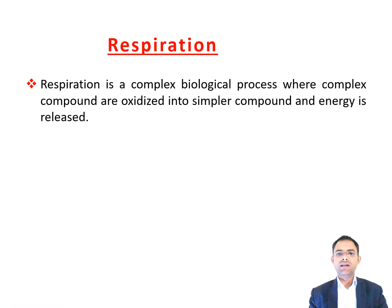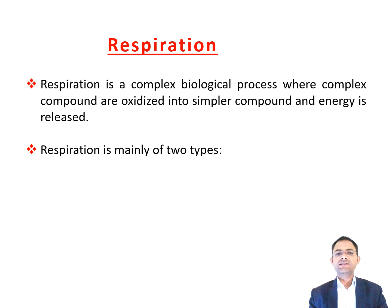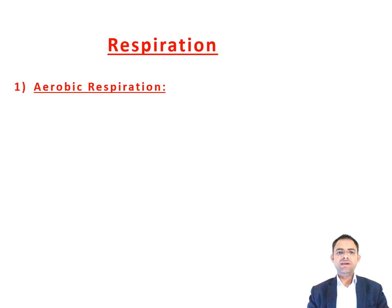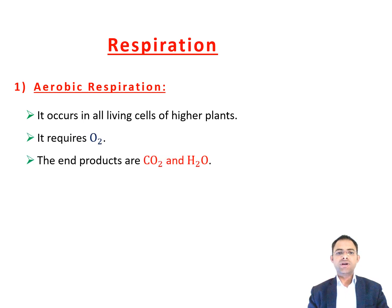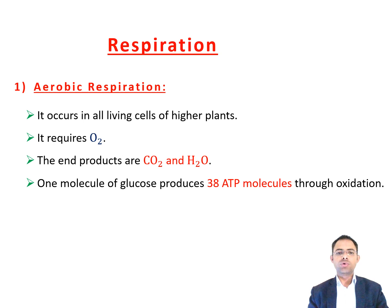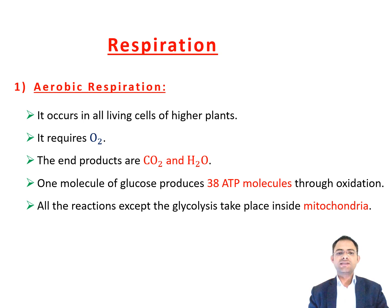Respiration is a complex biological process where complex compounds are oxidized into simpler compounds and energy is released. Respiration is mainly of two types: aerobic respiration and anaerobic respiration. Aerobic respiration occurs in all living cells of higher plants. It requires oxygen. The end products of aerobic respiration are carbon dioxide and water. In aerobic respiration, one molecule of glucose produces 38 ATP molecules through oxidation. The organic compounds are completely oxidized and thus high energy is released. The aerobic respiration reactions, except glycolysis, take place inside the mitochondria of a cell.